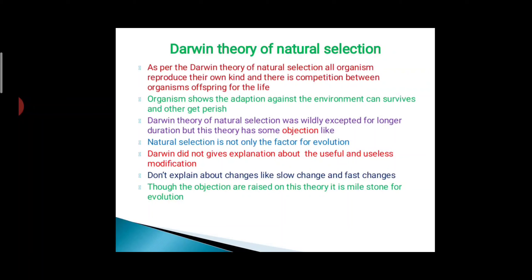As per Darwin's theory of natural selection, all organisms reproduce their own kind and there is competition between the organisms and their offspring for life. Organisms that show adaptation against the environment can survive, and others get perished. Perish means died or extinct.